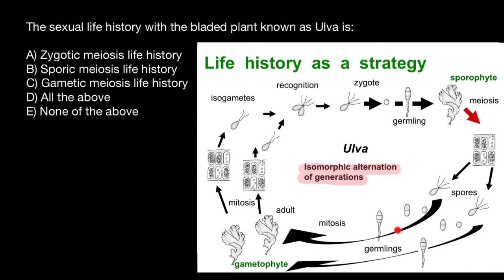Spores are haploid, and through the process of mitosis they grow into an adult form that looks the same as the sporophyte. This adult form, which is haploid, we call the gametophyte. The haploid plant looks the same as the diploid plant — hence the name isomorphic. We cannot tell the difference just by looking at the haploid and diploid plant.